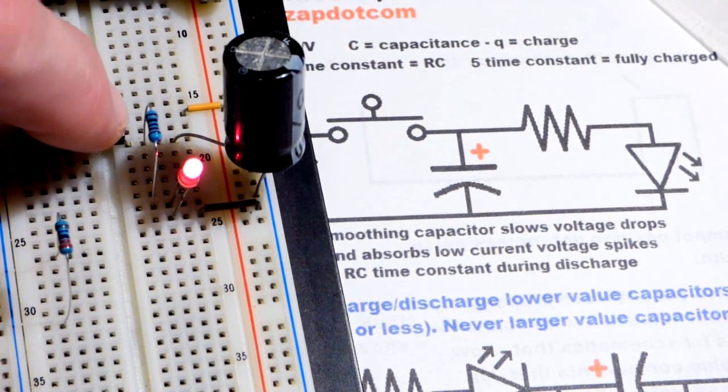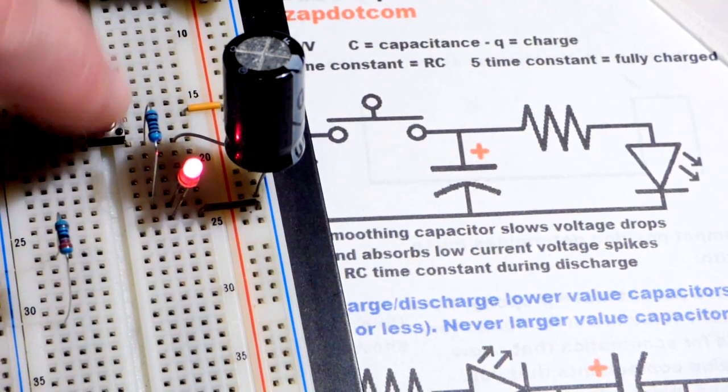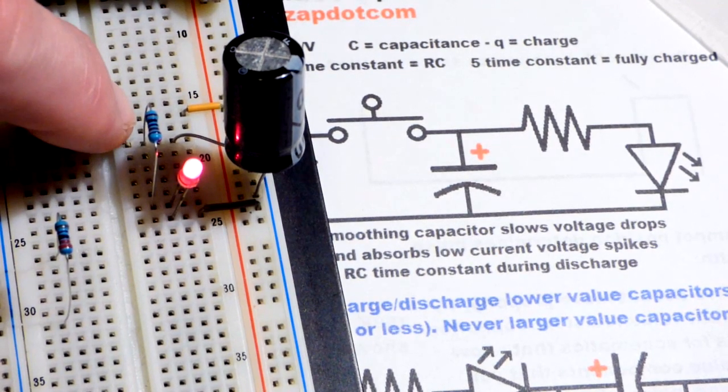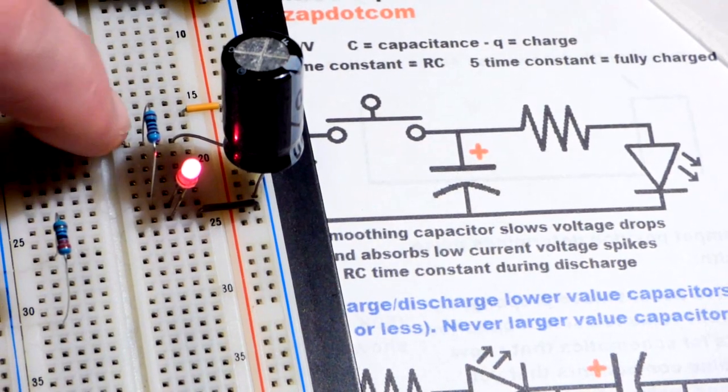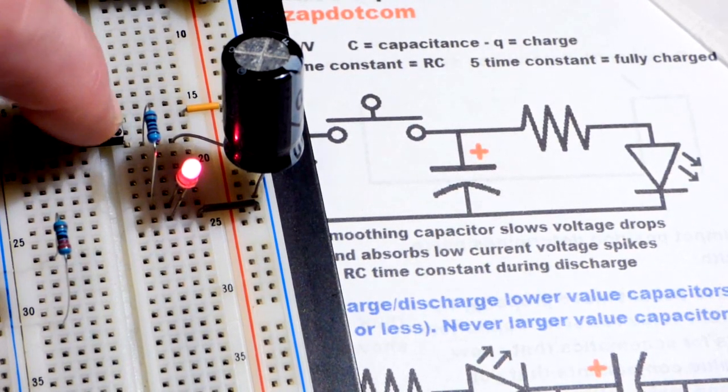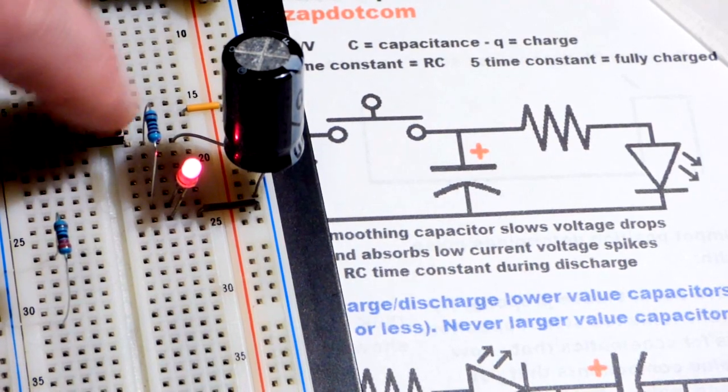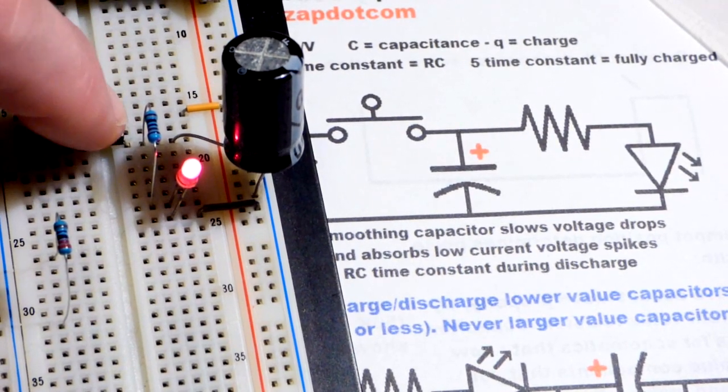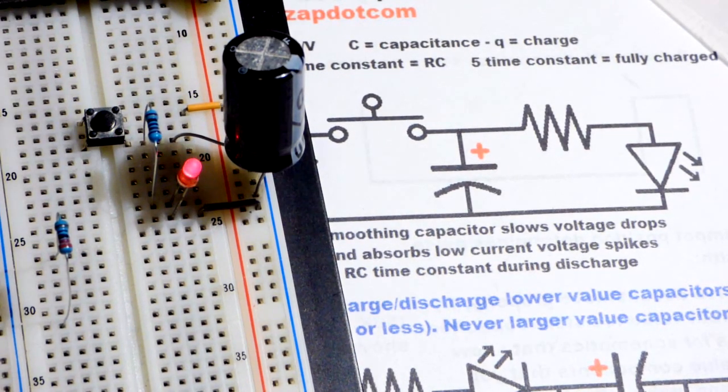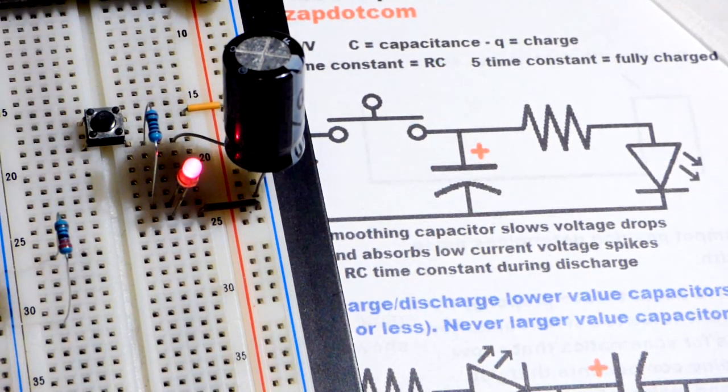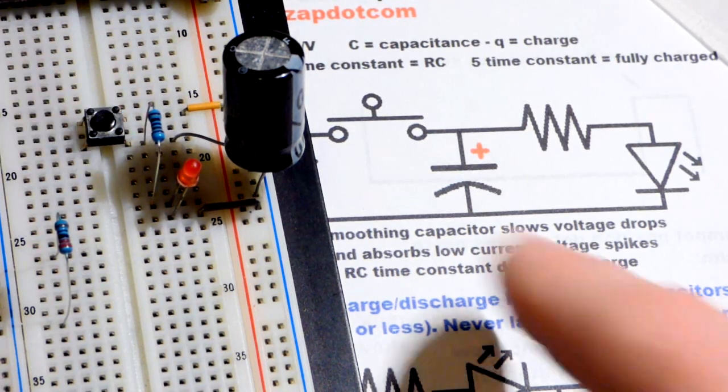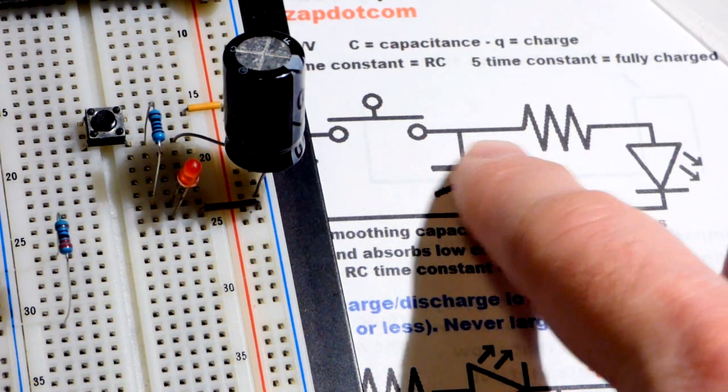As you can see there, I can release the switch and as far as we can tell from looking at the LED, if I go quick enough you can't even tell that the LED is getting more dim. You can if you pay a lot of attention, but somebody not really paying attention won't even notice the LED was getting more dim. And that's really what a smoothing capacitor is.